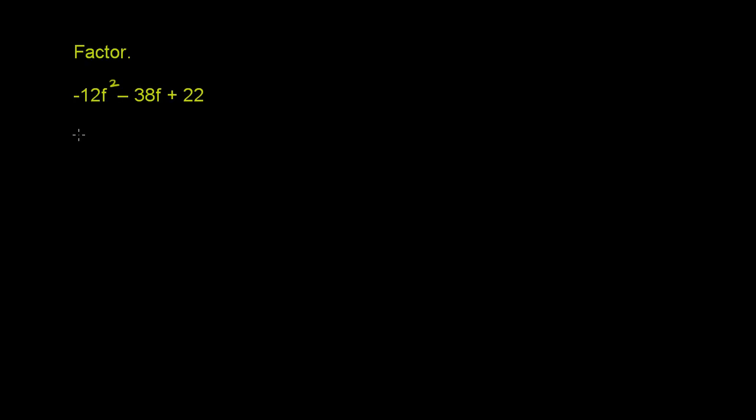So this expression is the same thing as -2 times... -12f² divided by -2 is 6f². -38 divided by -2 is positive 19, so it's +19f. And then 22 divided by -2 is -11.